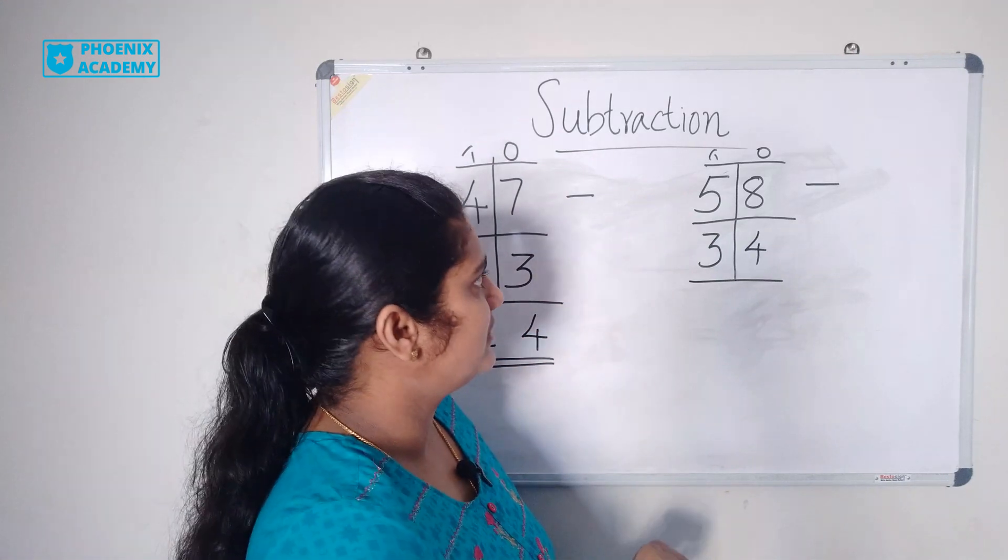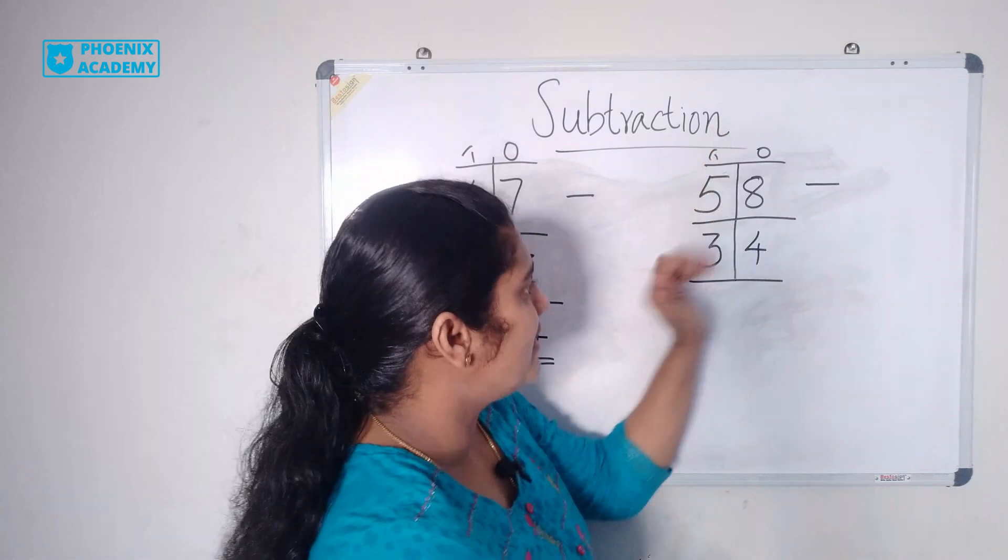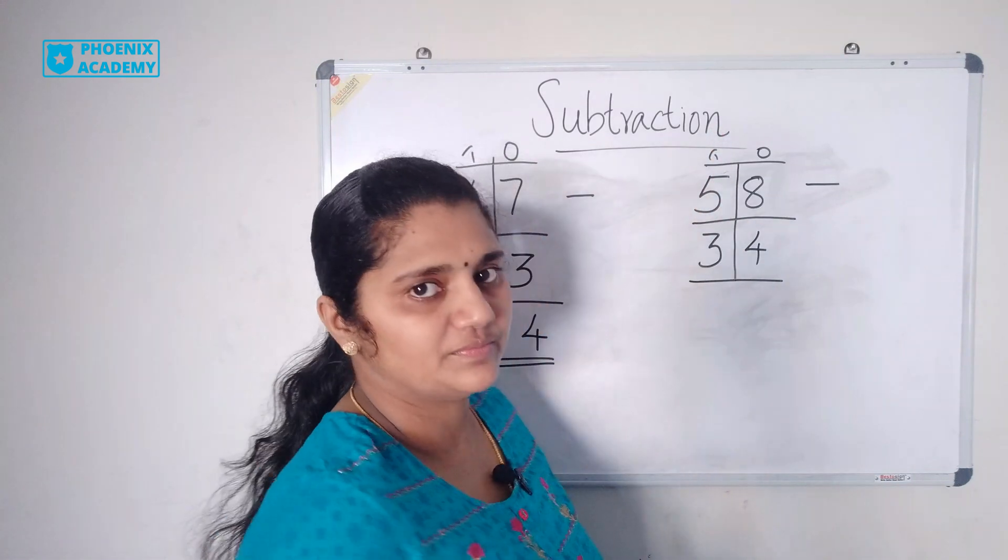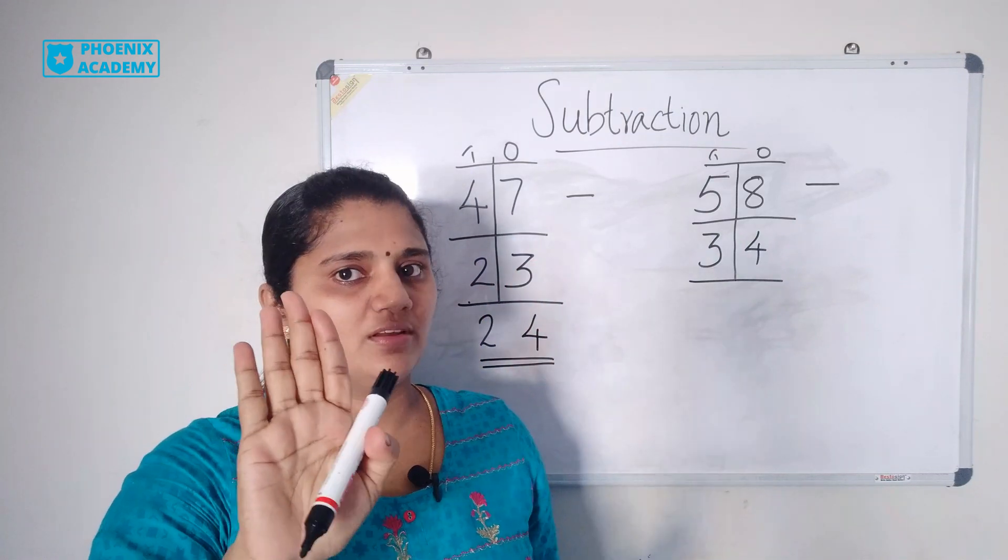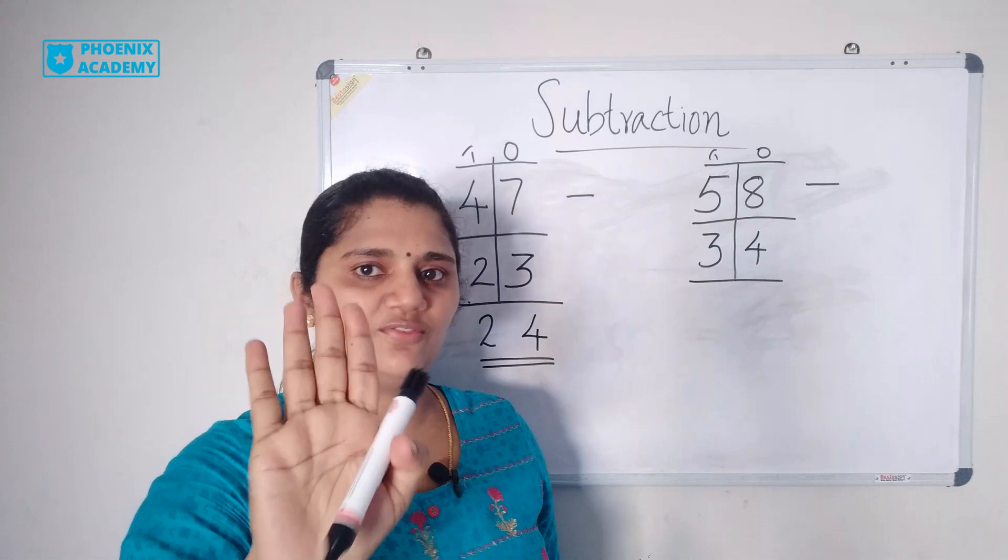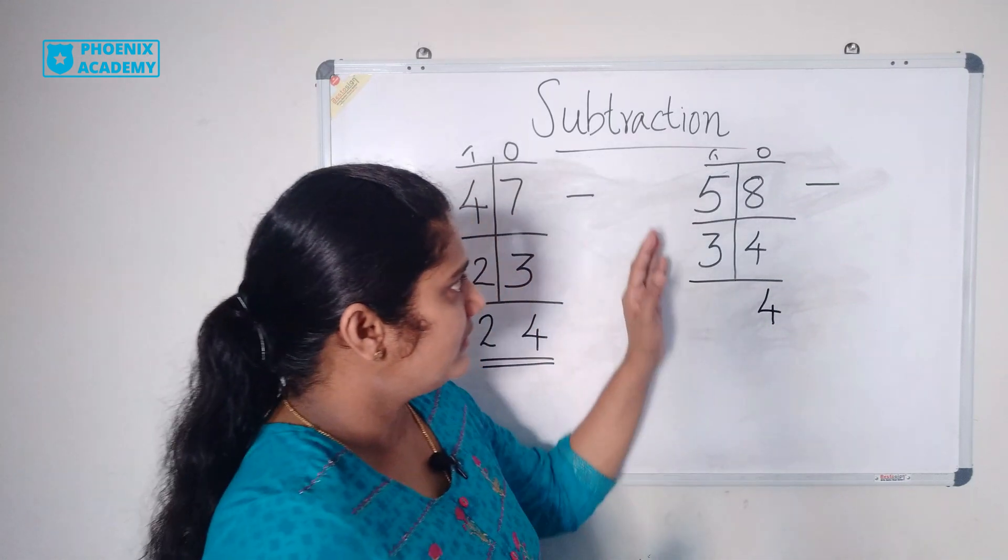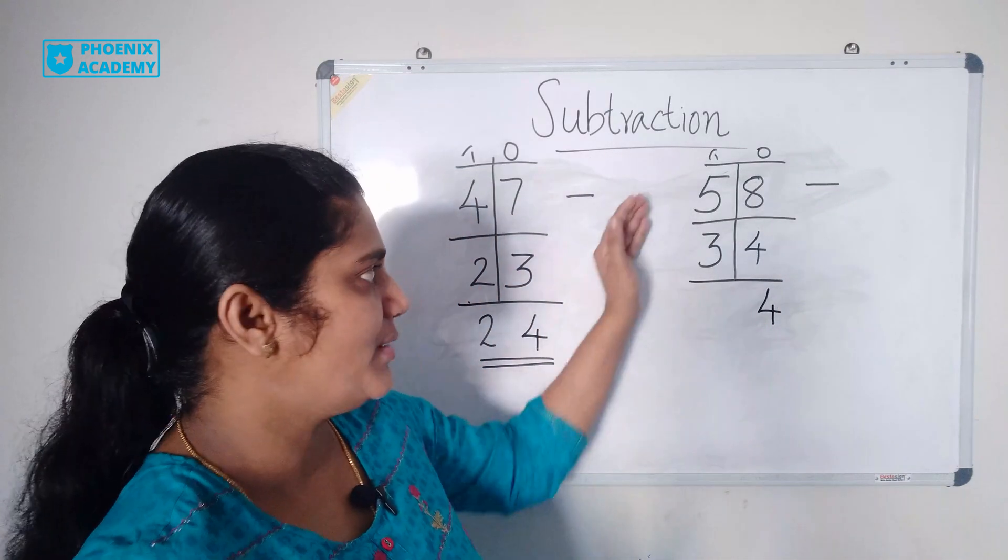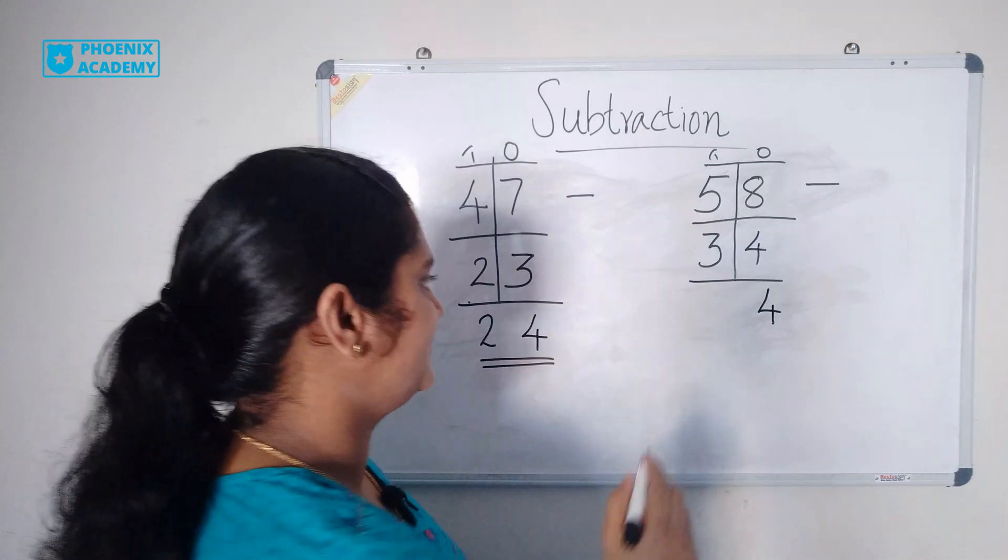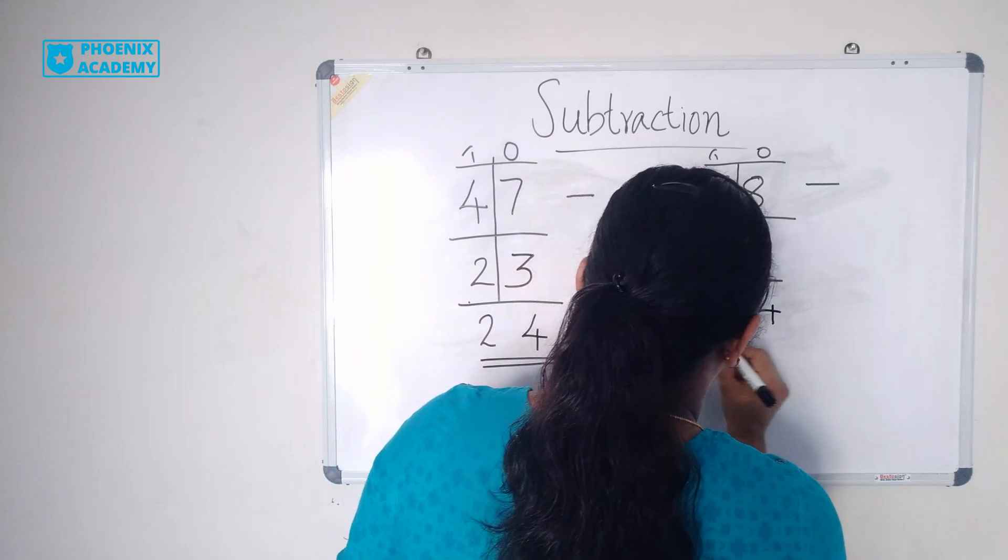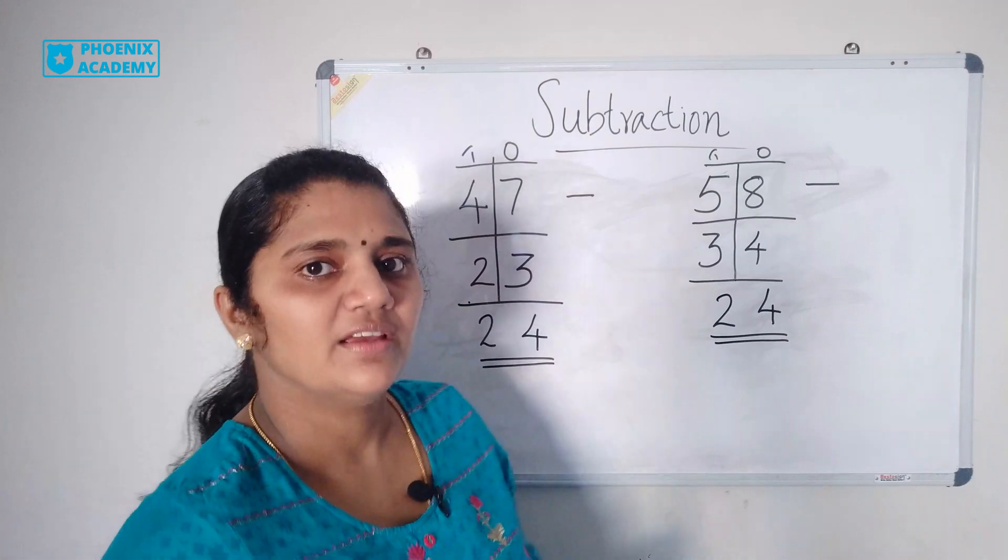Let's do this example. 58 minus 34. Let's subtract ones values. 8 minus 4. 1, 2, 3, 4. So 8 minus 4 is 4. Let's subtract tens now. 5 minus 3 is 2. So 58 minus 34 is 24.